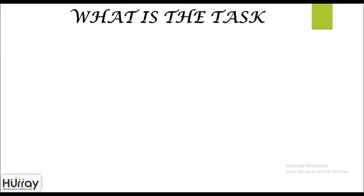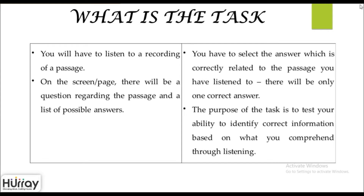Now let us have a look at what the task is all about. You will have to listen to a recording of a passage. On the screen there will be a question regarding the passage and a list of possible answers. You have to select the answer which is correctly related to the passage you have listened to. There will be only one correct answer. The purpose of the task is to test your ability to identify correct information based on what you comprehend through listening.